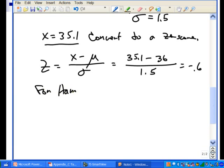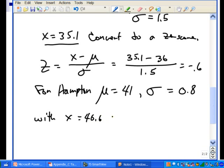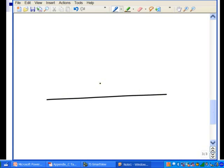Now for Hampton, the mean is 41 inches and the standard deviation is 0.8 inches. That year they had 40.6 inches of snow. So z is going to be 40.6, the x value, minus the mean of 41, divided by the standard deviation of 0.8. You end up with negative 0.5. Again, a little bit less than what they usually got.